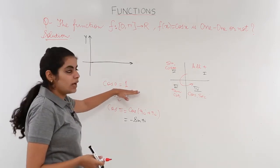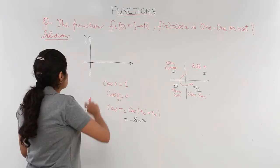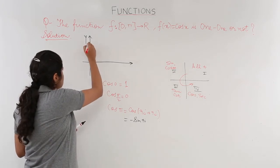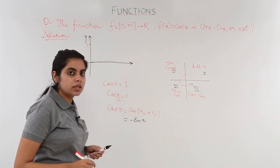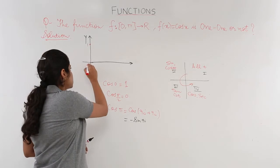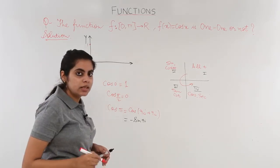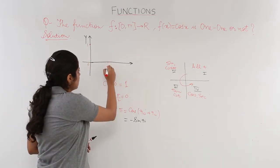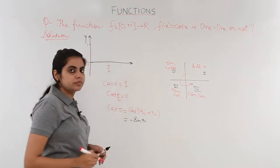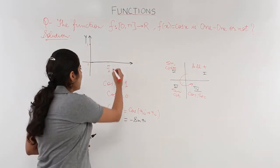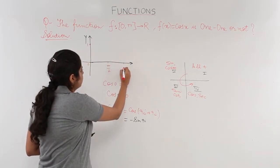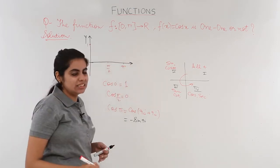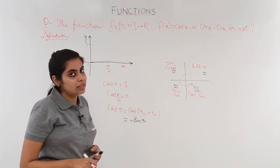Now the cos 0 value is 1, so my graph starts from 1. Suppose this is 1, then here it is 0 degrees, somewhere here it is 90 degrees (that is π/2), and somewhere beyond it at the same distance is π, that is 180 degrees.